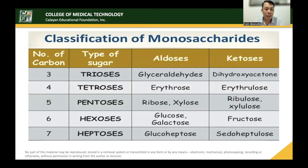The number of carbons 3, 4, 5, 6, and 7 correspond to trioses, tetroses, pentoses, hexoses, and heptoses. The aldose form of triose is glyceraldehyde, erythrose for 4-carbon, ribose/xylose for 5-carbon, glucose/galactose for 6-carbon, and glucoheptose for 7-carbon. For ketoses, you have dihydroxyacetone, erythrulose, ribulose, fructose, and sedoheptulose. That is how you name the ketoses and aldoses.